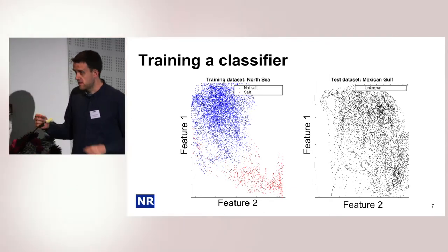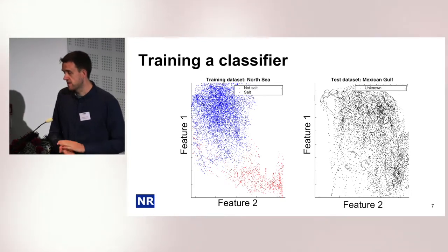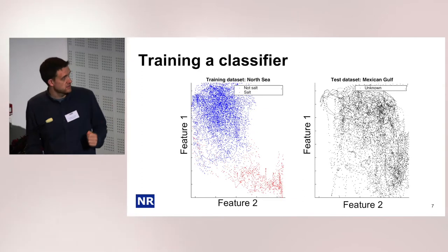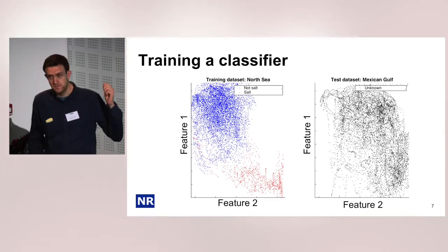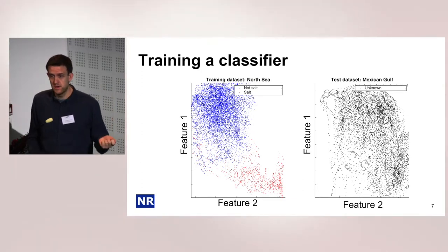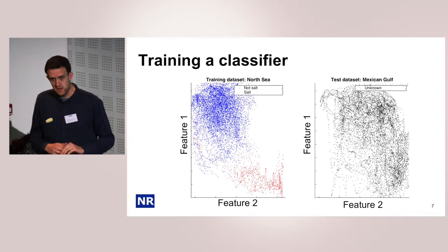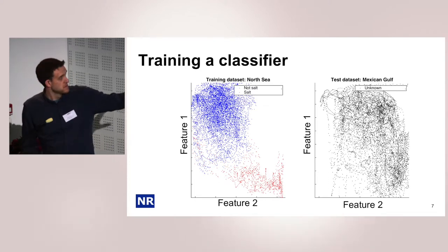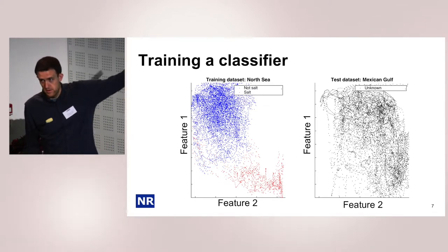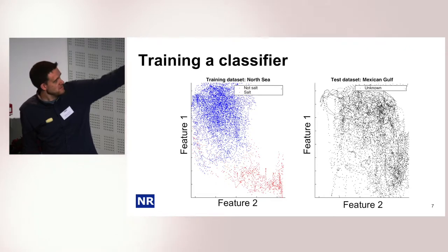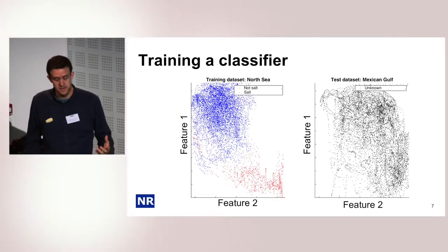The classifier then takes these features, one pixel at a time, and predicts whether the center pixel of this window is a salt body or not. When we have a classifier, we have to train it. Typically we have some labeled data — the blue part labeled as not salt and the red part labeled as salt — and we have a new data set where we don't have an interpretation. We compute the features for each of these data sets.